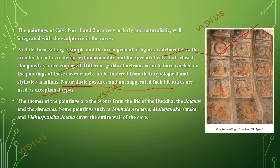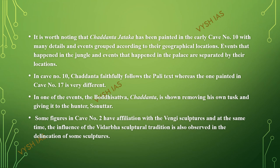The themes of the paintings are events from the life of the Buddha, the Jataka stories, and the Avadanas. Some paintings such as the Simhala Avadana, the Mahajataka, the Vidrupandita Jataka cover the entire wall of the cave. It is worth noting that the Chantata Jataka has been painted in the early Cave number 10, and many details and events are grouped according to their geographical location — events that happened in the jungle and events that happened in the palace are separated by their locations.